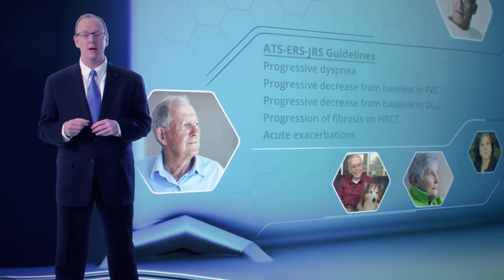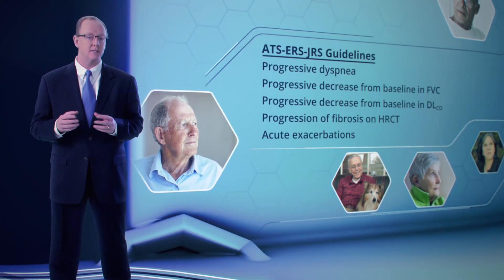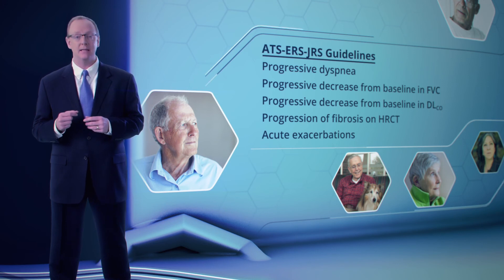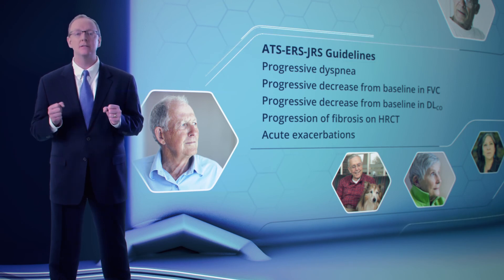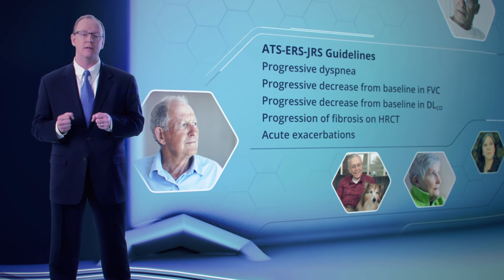Thus, careful monitoring of IPF every 4 to 6 months, as indicated by the ATS, ERS, JRS consensus guidelines, allows patients with progressive disease to be identified, and is important for determining appropriate disease management.